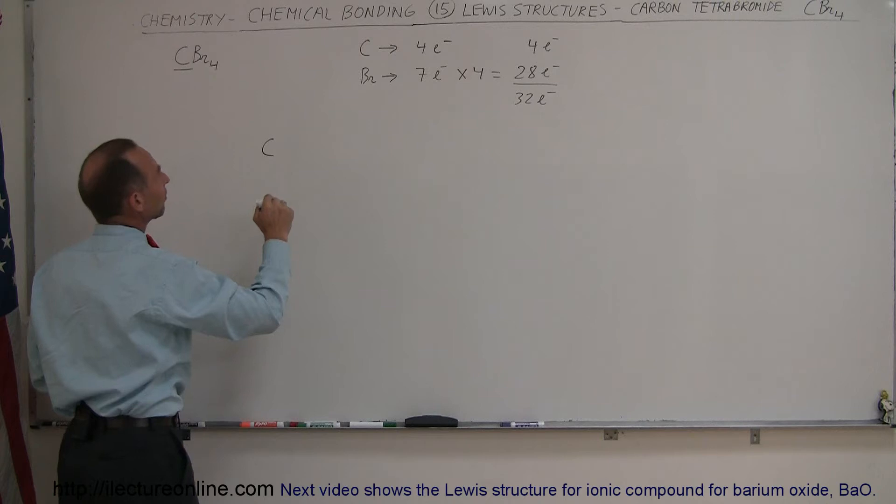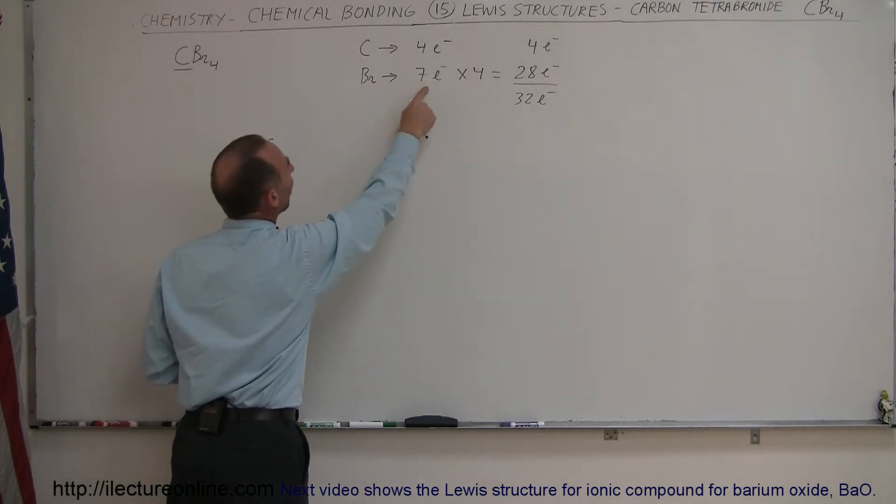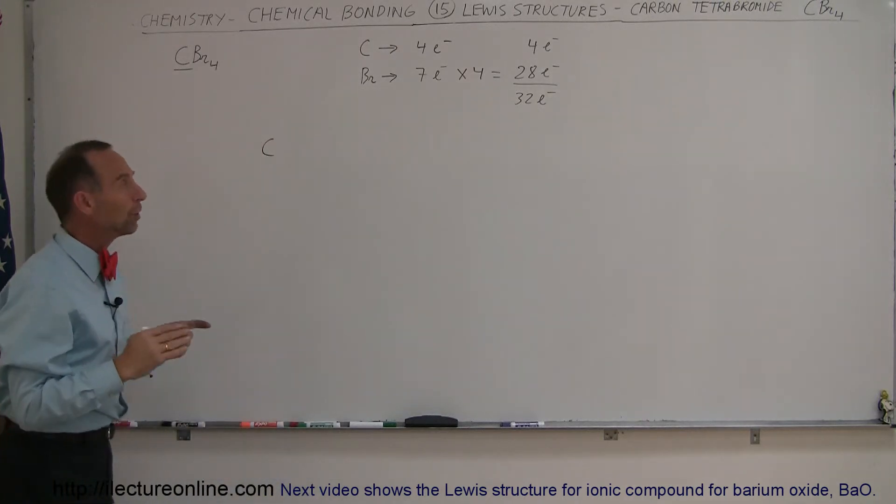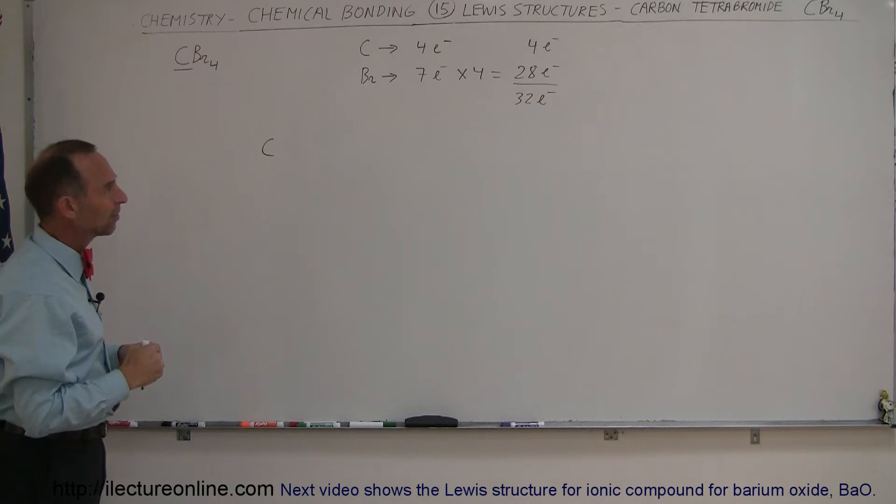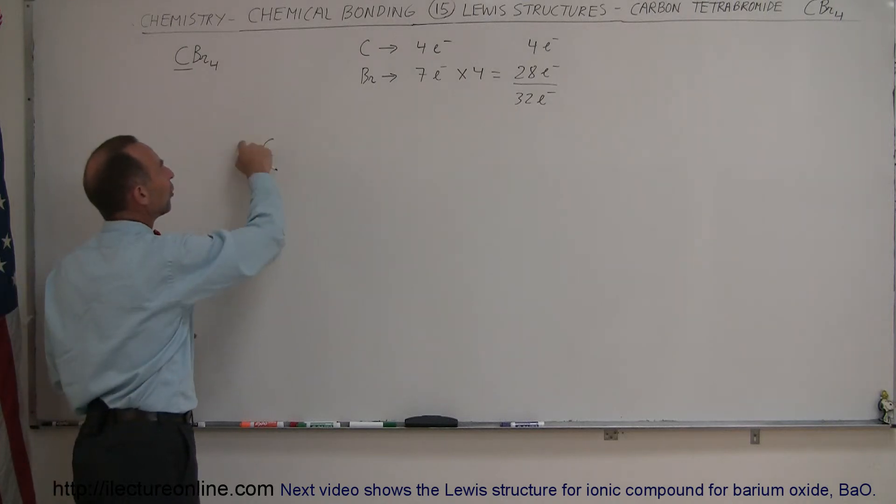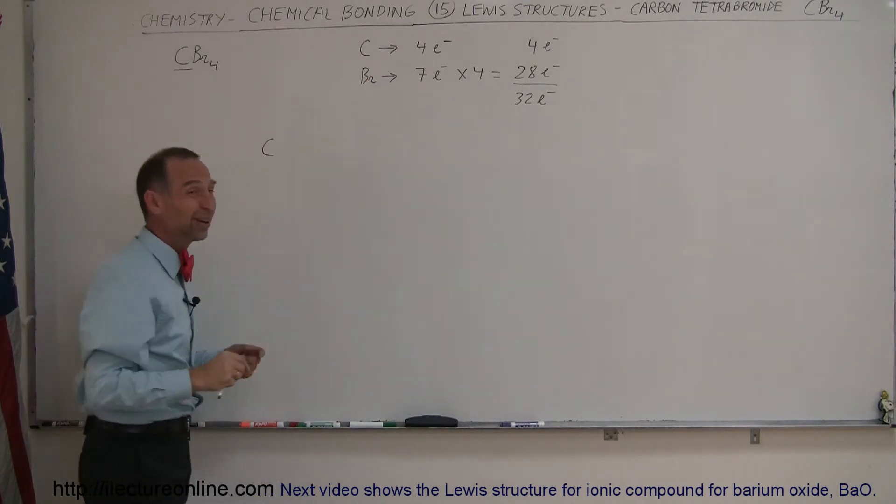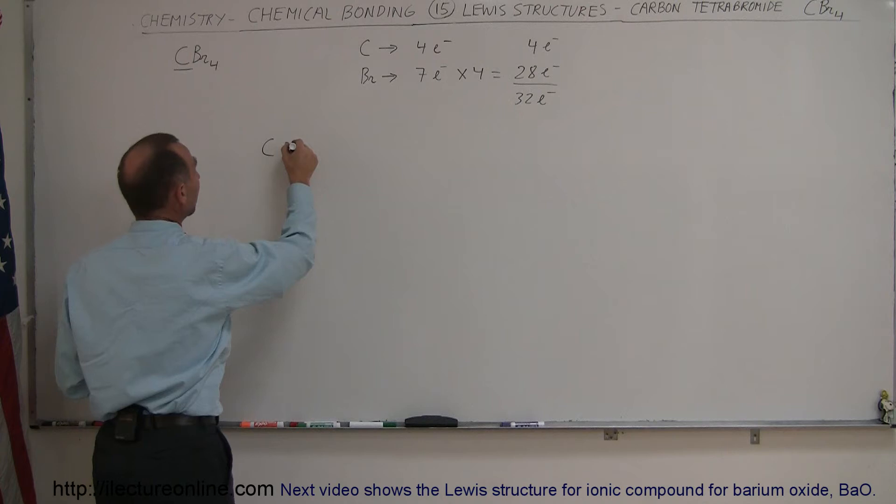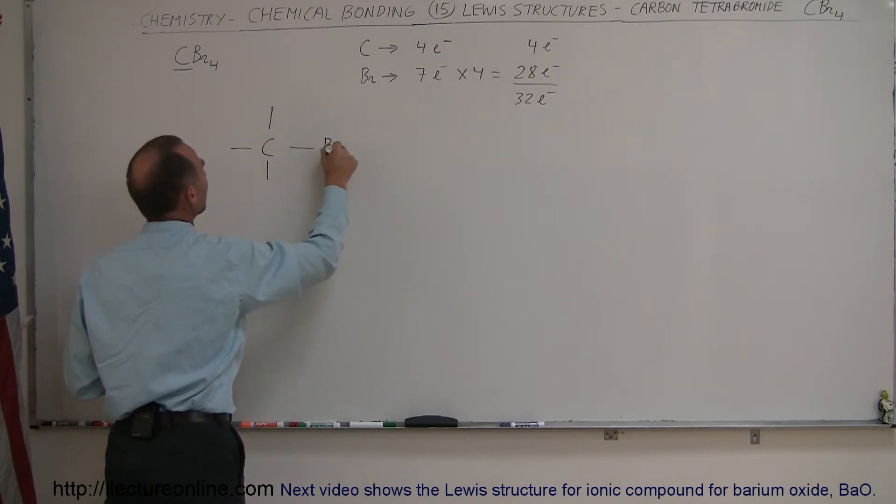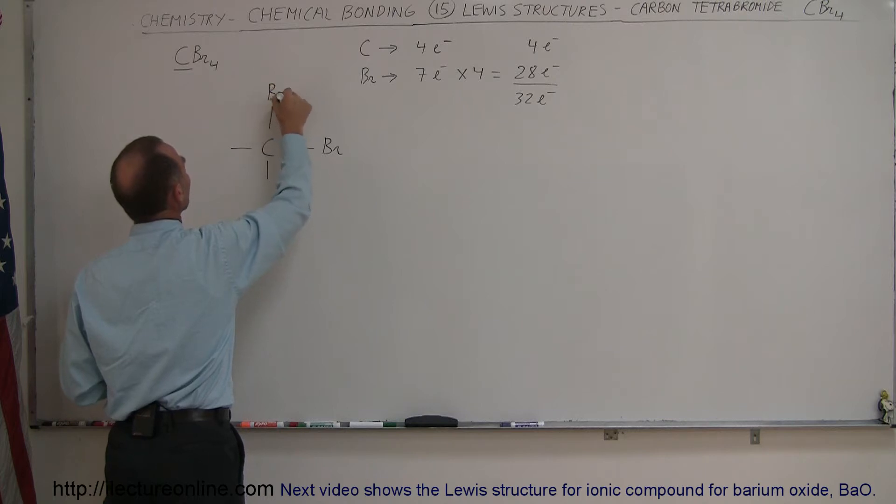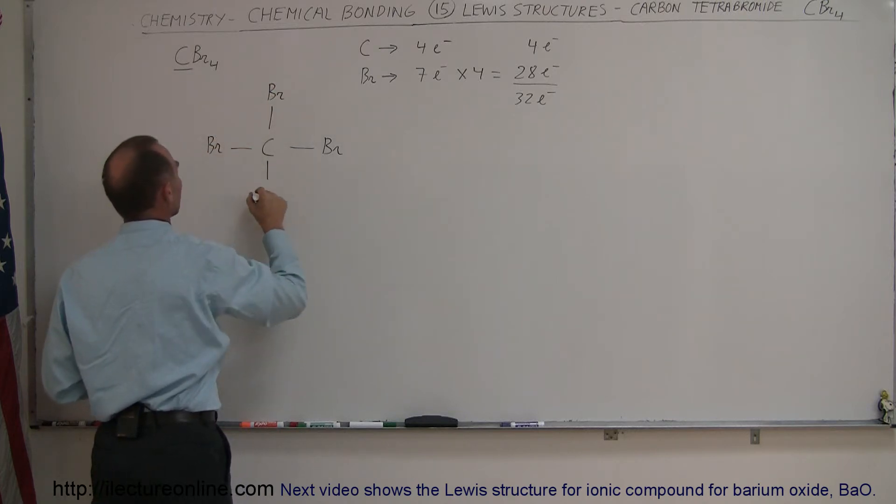Now, in addition to that, notice that bromine needs one more electron to form a full eight electrons in its valence set. That means that typically bromine would expect to make one bond. Since carbon can make up to four bonds, since it has four valence electrons, it makes sense that it probably looks like this. There's going to be four bonds with carbon with a bromine atom on each side of that bond, like so.